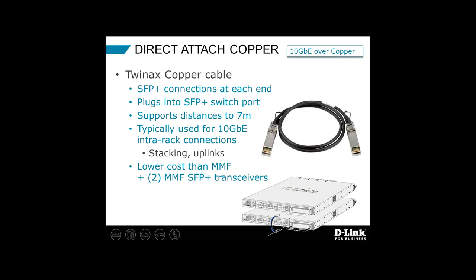I don't want to discount another 10 gig over copper technology called Direct Attach — a lot of people call these DAC (Direct Attach Copper) cables. This is basically a twin-axe copper cable with SFP+ style connectors at each end. You plug these into your SFP+ switch ports, server ports, or storage ports. This is a very low-cost way to get 10 gig connectivity without spending money on fiber — recognizing that multimode fiber, SFP+ transceivers on each end, and terminating fiber all cost money. If you're going short distances up to roughly seven meters, you can forego the multimode fiber and use Direct Attach copper. We see a lot of DAC used within a rack or from rack to rack as long as distance is limited to seven meters.